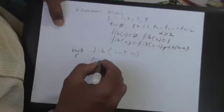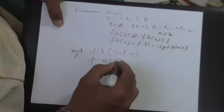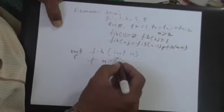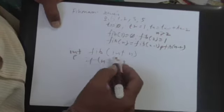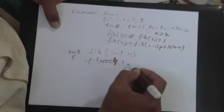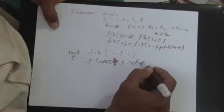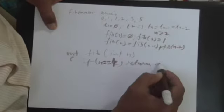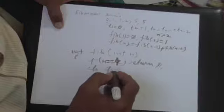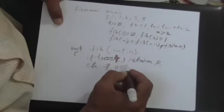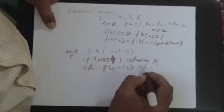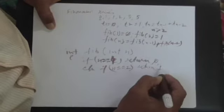Very simple. If n is equal to 1, you say return 0. Else, if n is 2, you return 1.